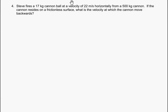Okay, final part. Steve fires a 17-kilogram cannonball at a velocity of 22 meters per second horizontally from a 500-kilogram cannon. If the cannon resides on a frictional surface, what is the velocity at which the cannon moves backwards? So this is kind of a story, and you kind of have to have a background in what cannons do.